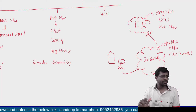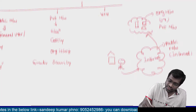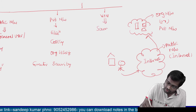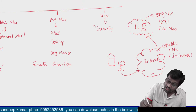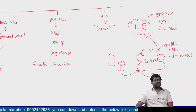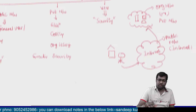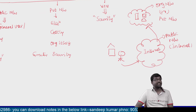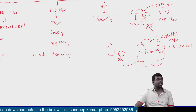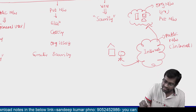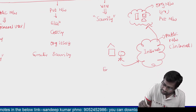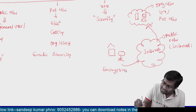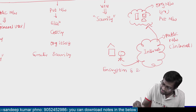What is the specialty of this particular virtual private network? VPN provides security. Because we are using public networks, which are not very secured, VPN provides security through a concept called encryption and decryption.